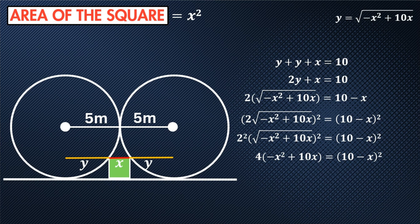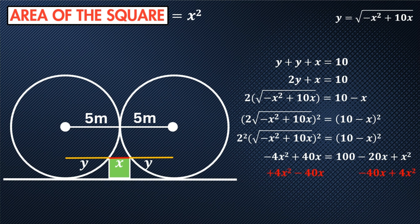Let's first expand the bracket on the left: negative 4x squared plus 40x. Then square the bracket on the right: 100 minus 20x plus x squared. Now let's set the equation to zero — add 4x squared to both sides and subtract 40x from both sides. This gives us zero equals 100 minus 60x plus 5x squared.